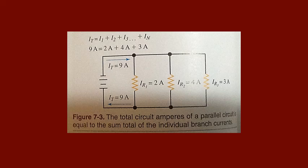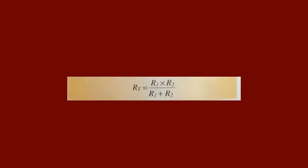Parallel circuit resistance: when resistors are connected in parallel, the total resistance is always less than the smallest resistance in the parallel group. For example, if a 6-ohm and a 4-ohm resistor are connected in parallel, the total resistance will be less than 4 ohms. There are several methods to determine total resistance: the product over the sum method, the reciprocal method, the equal resistances method, and the graph method.